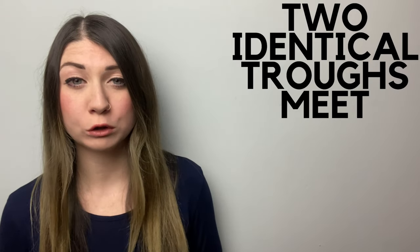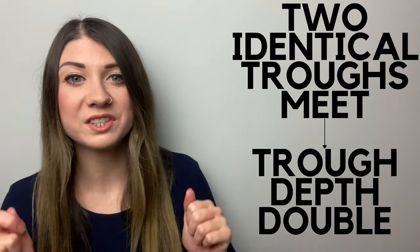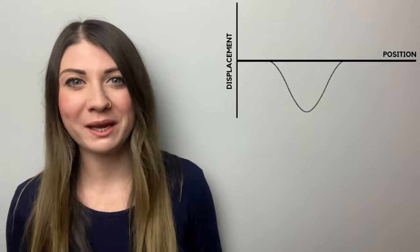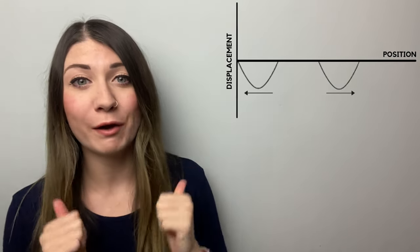If two identical troughs meet then the trough depth would double. So before they would look like this approaching each other. And then they would combine to make a double trough, and then carry on out the other side again.